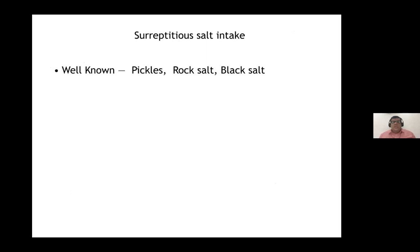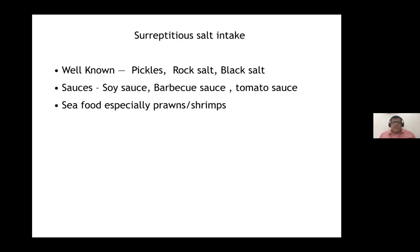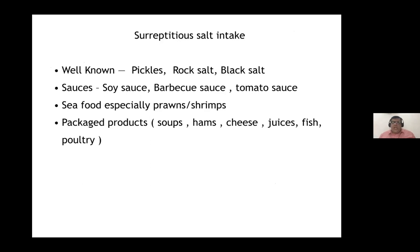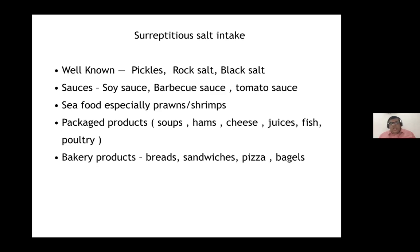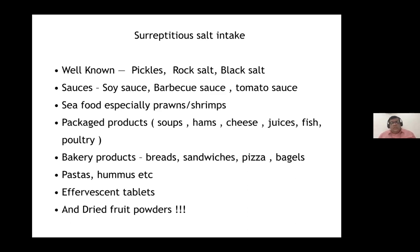Surreptitious salt intake should be counselled against. Beyond obvious sources like pickles, rock salt, and black salt, patients should be warned about soy sauce, barbecue sauce, tomato sauce, seafood especially prawns and shrimps, packaged soups, hams, cheese, juices, baking products like bread, sandwiches, pizzas, bagels, pasta, and hummus — all rich in salt due to baking soda. Effervescent tablets contain sodium bicarbonate and carry significant sodium load. Dried fruit powders like amchur or imli powder often have hidden salt.